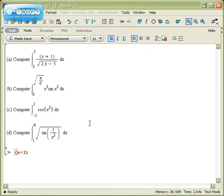So for the first one it would be x plus 1 divided by the square root of 2 times x minus 5. So I'll enter that function just to make sure I've got it correct.